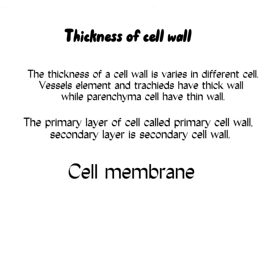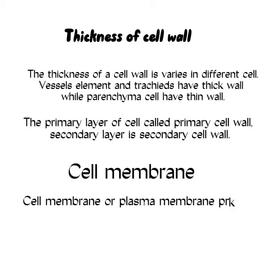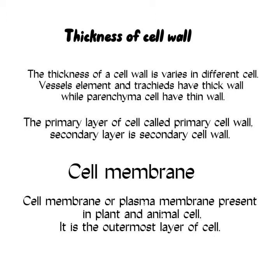Cell membrane, or plasma membrane, is present in both plant and animal cells. It is the outermost layer of the cell. Cell membrane is found in plant and animal cells, and it is the outermost layer of the cell.